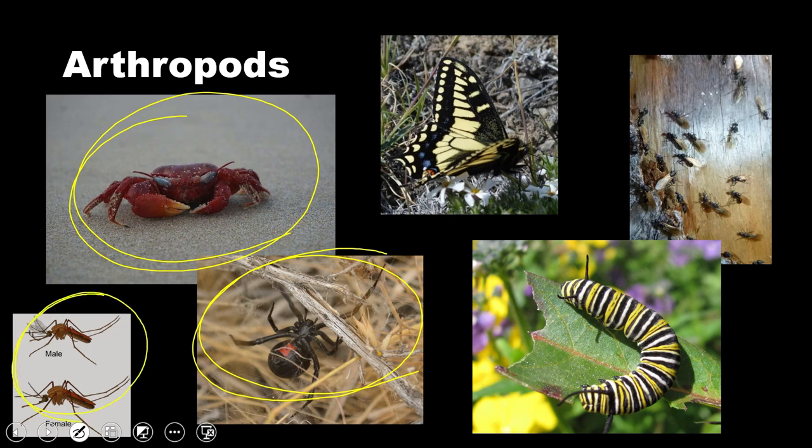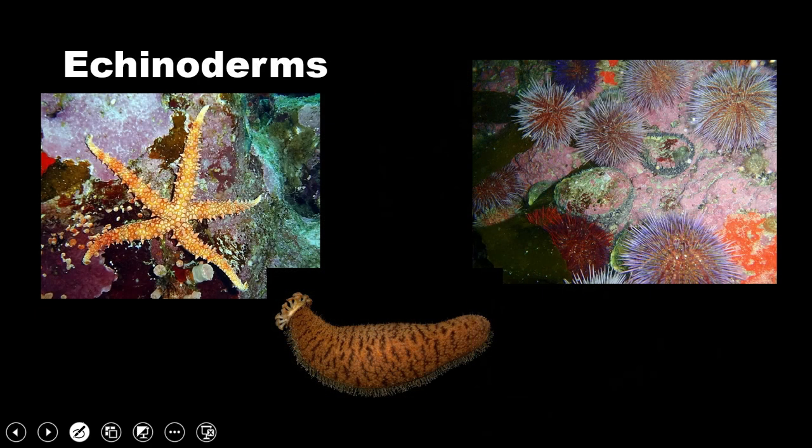But probably the biggest one in terms of its impact is the mosquito. Mosquitoes are not only annoying, but can spread disease from one person to another because they suck blood. So major health concern there with mosquitoes. And there are quite a few species of them.